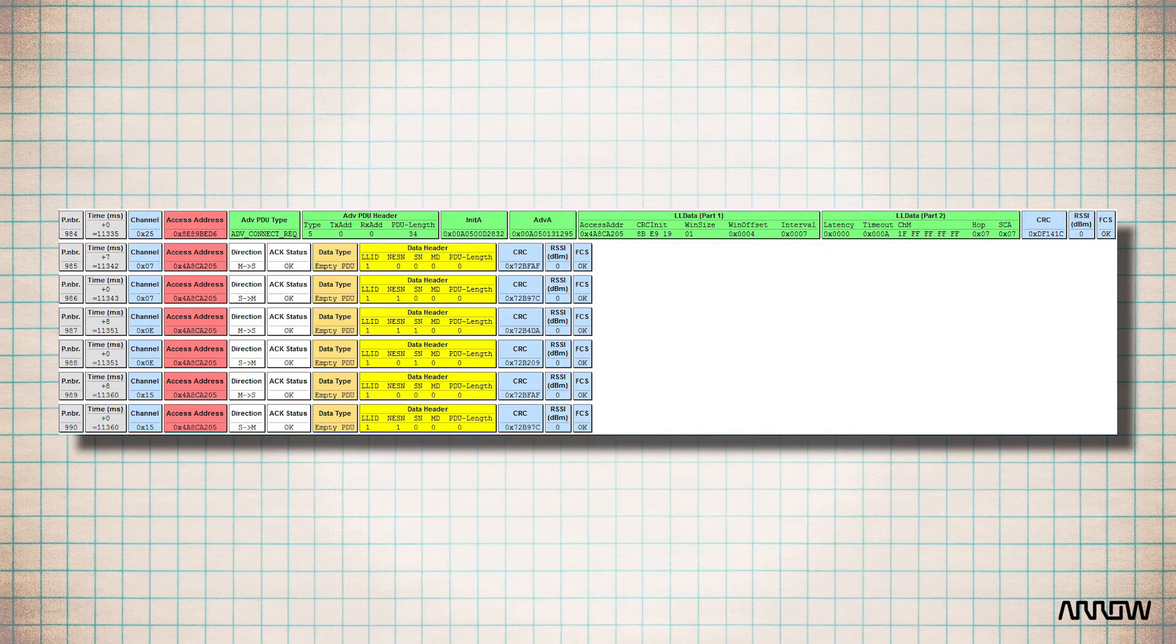The sequence number enables reliable data transfer. The sequence number for each new data packet is different from the last, with the first packet having a sequence number of zero. This allows a receiving device to determine if the next packet is a retransmission (same sequence number) or a new packet (different sequence number). As it's only one bit, it alternates between one and zero for each new data packet.